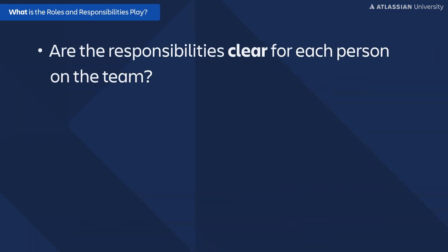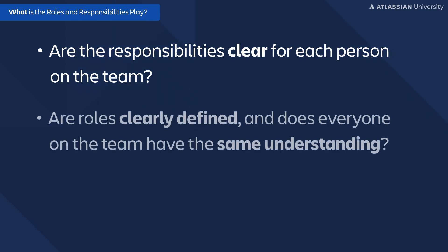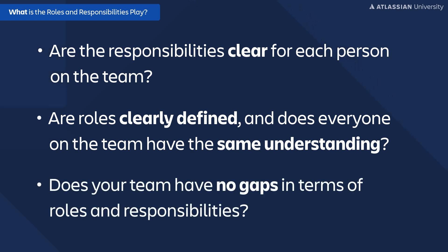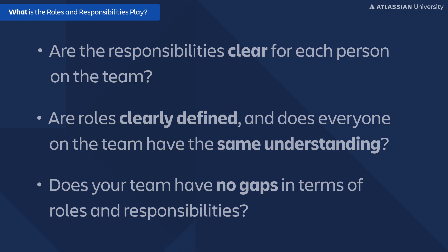So here are some questions for you. Are the responsibilities clear for each person on the team? Are roles clearly defined and has everyone on the team the same understanding of it? Or do you think there are no gaps at all in terms of roles and responsibilities? If you think your team should probably talk about these things, here's something that can help you.